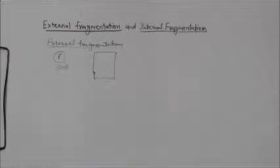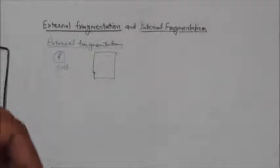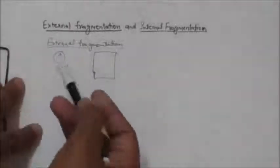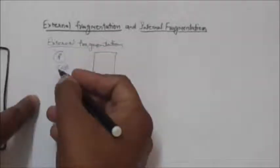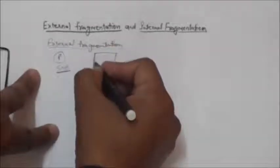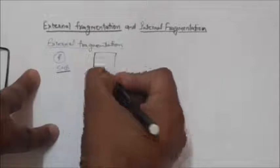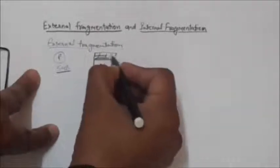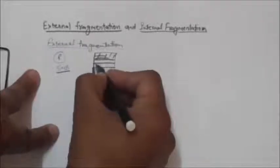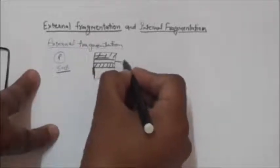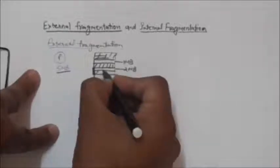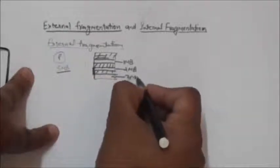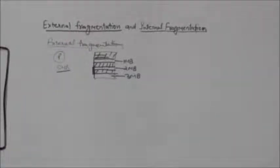To be executed, a process should be in main memory. Suppose there is a process P that needs to be executed, so for its execution it must be stored in main memory. This process P requires 5 MB of memory. In contiguous memory allocation, a process is stored in main memory in a single contiguous segment.